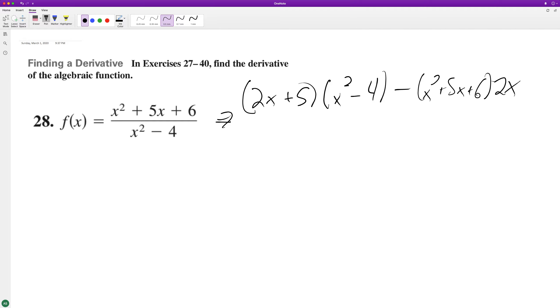Let's simplify this a bit. So this turns into 2x cubed plus 5x squared minus 8x minus 20 minus 2x cubed.